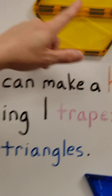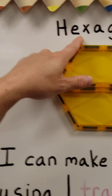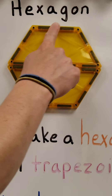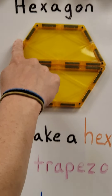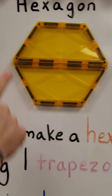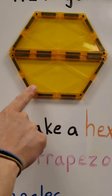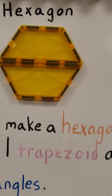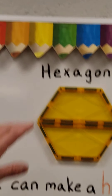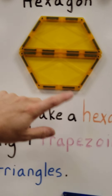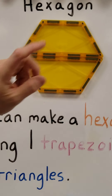Our next shape is a hexagon. And a hexagon has one, two, three, four, five, six sides and one, two, three, four, five, six vertices. You might notice that if it has six sides, it has six vertices — like a square has four sides and it has four vertices.